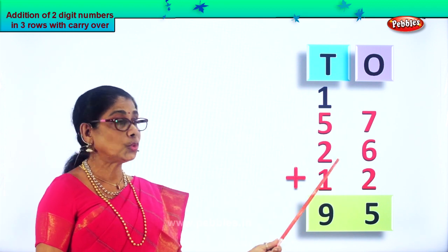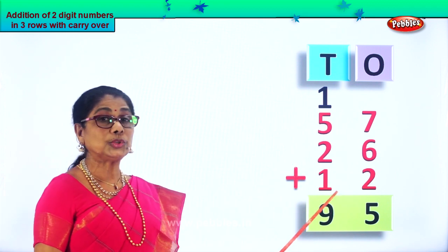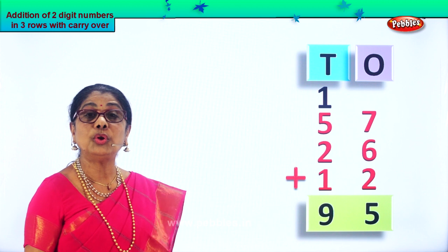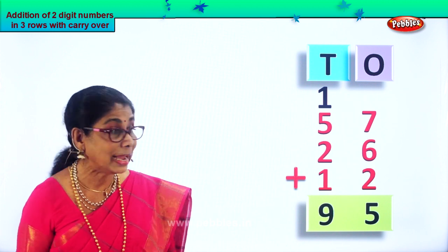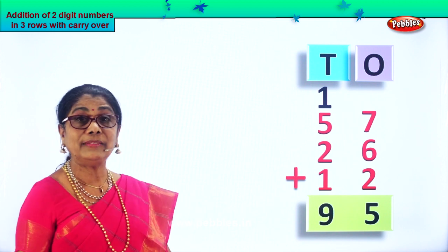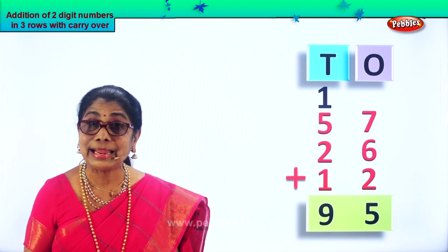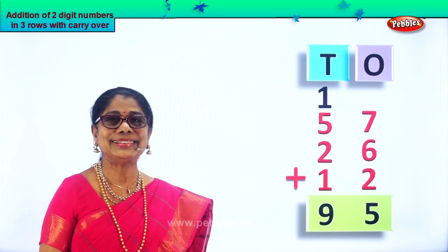Fifty-seven plus twenty-six plus twelve gives you the answer ninety-five — that is nine tens and five ones.